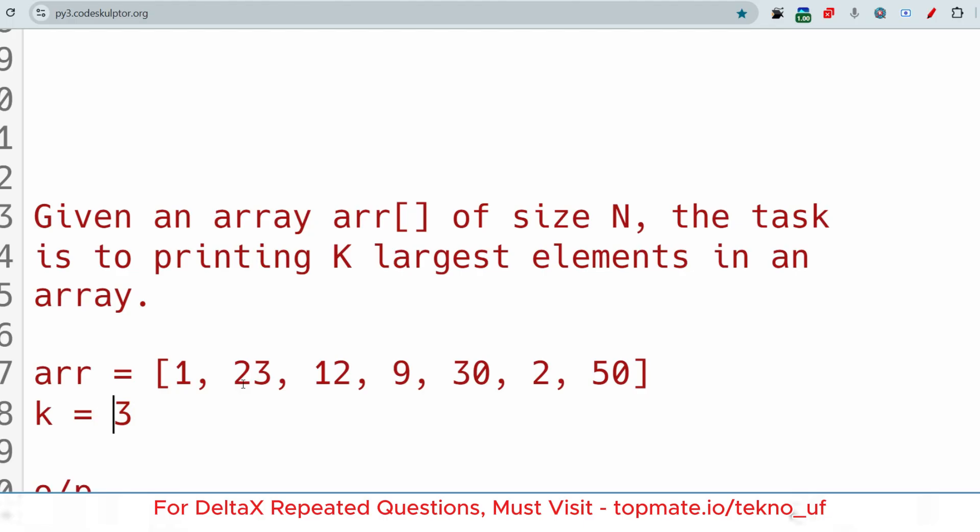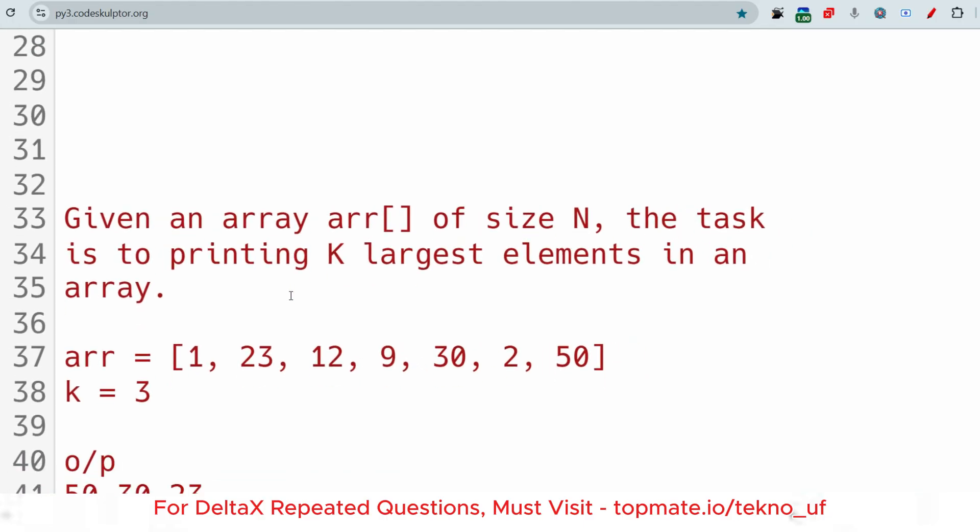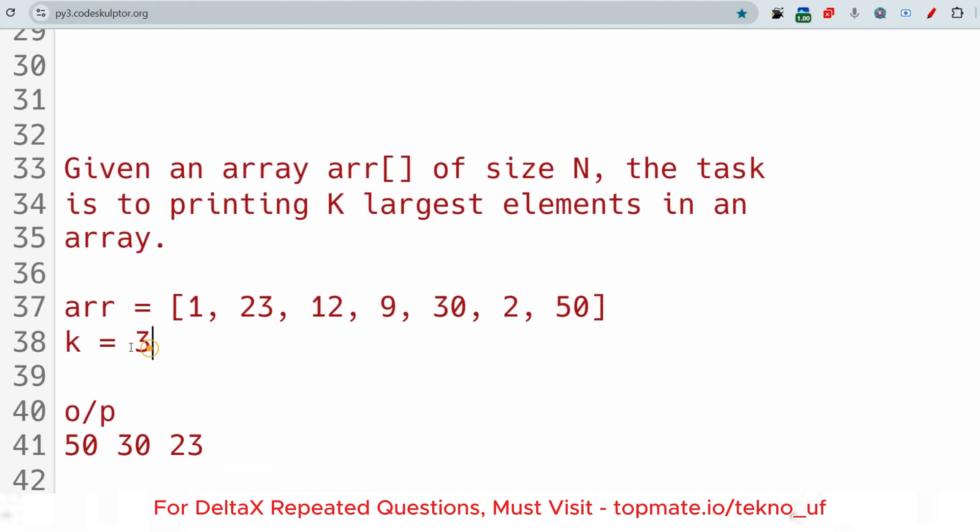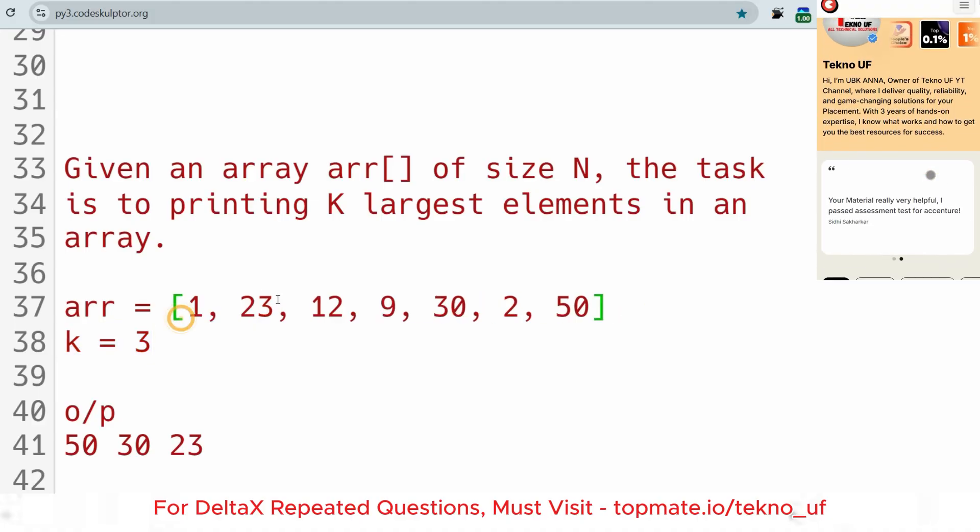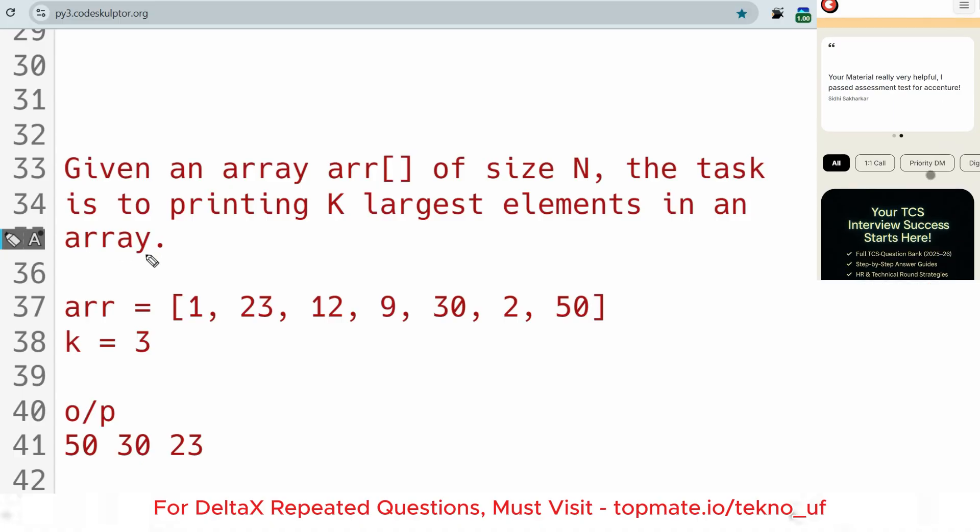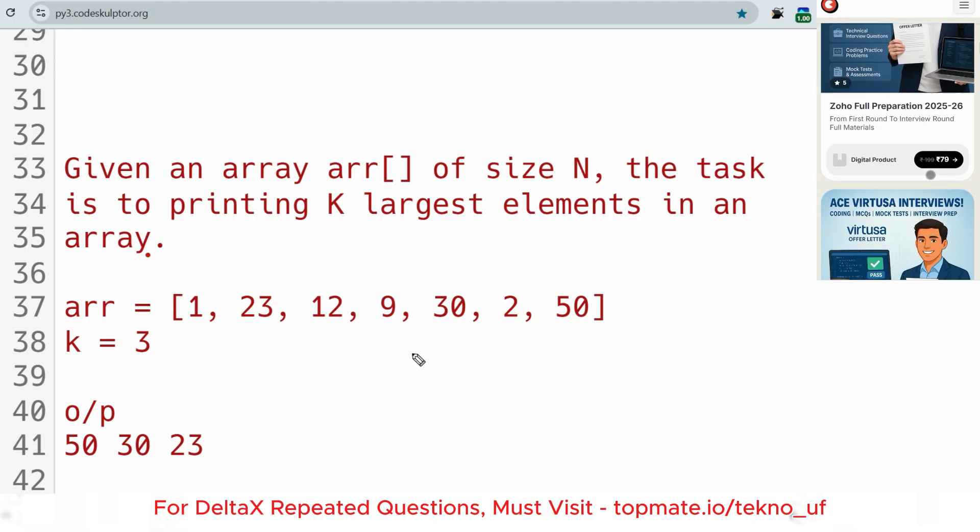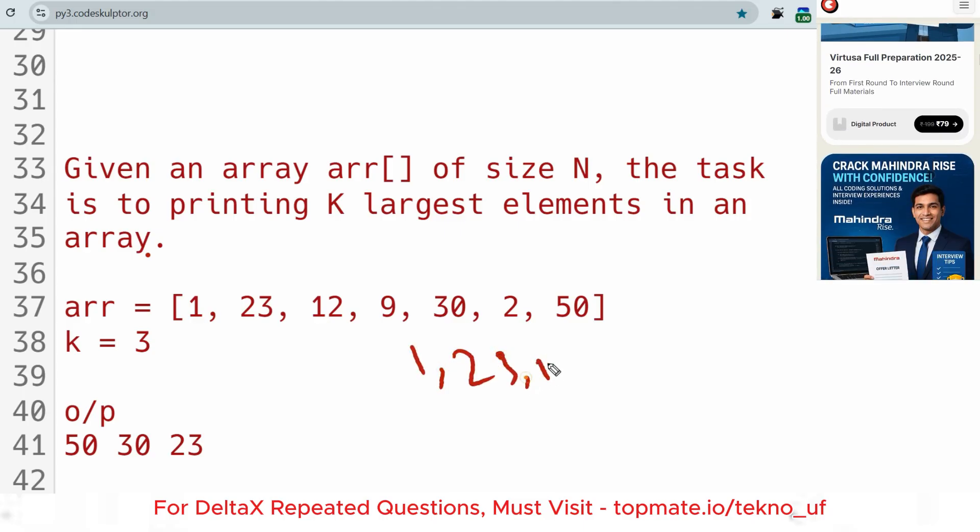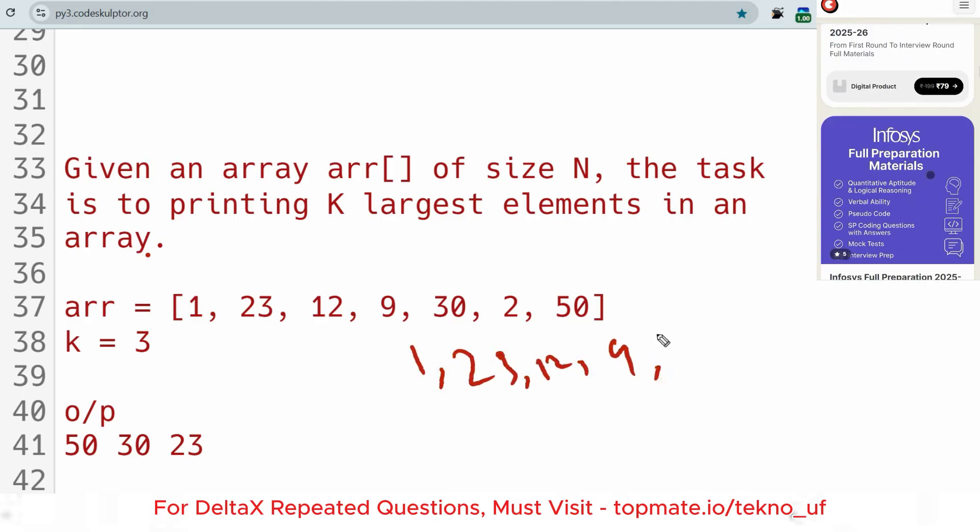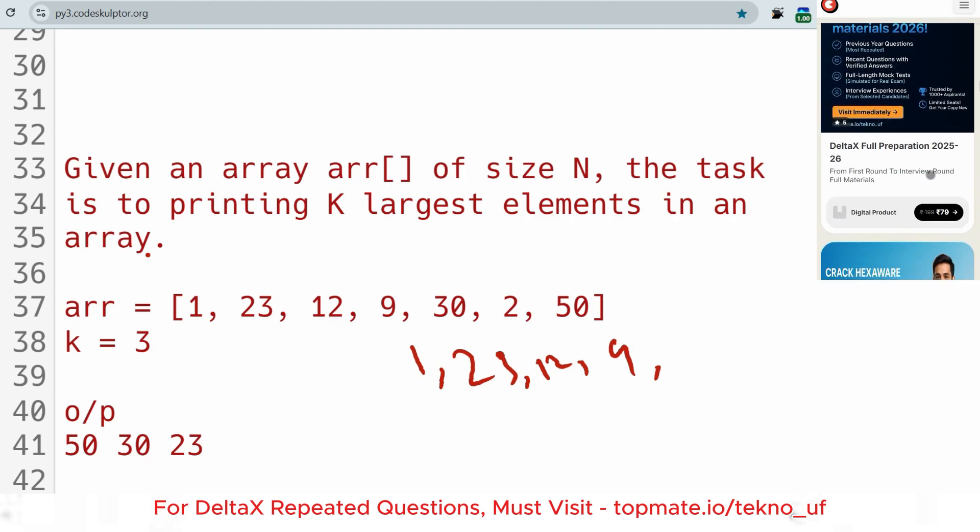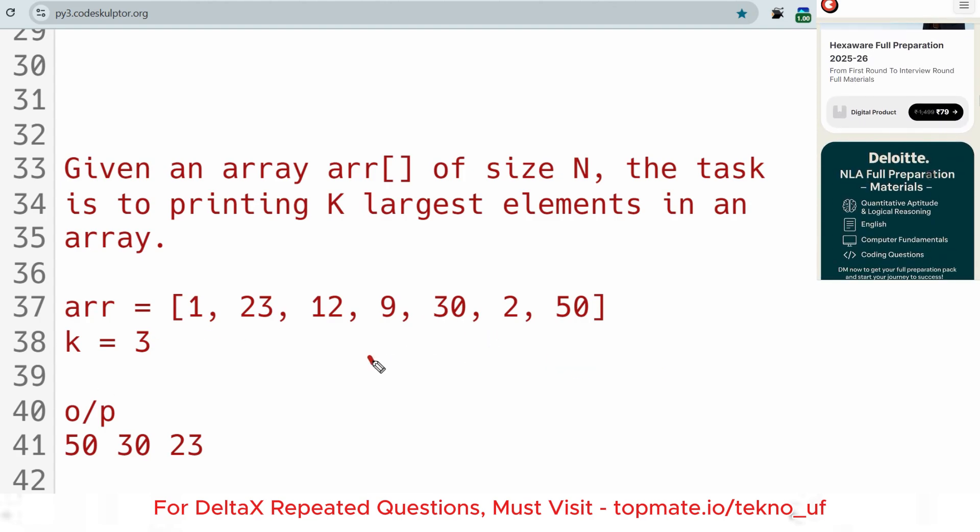You have to print the K largest values. In this array, what are the largest values? If I just rearrange these values like 1, 2, 9, 12, 23, 30, then 50, this is in ascending order we have sorted.